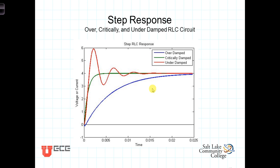The step response of a circuit refers to the way the circuit responds when a voltage or current power supply is instantaneously switched into the circuit. As we saw in the natural response, the circuit responds in different ways depending upon its dampening. For an overdamped circuit, the voltage goes from one voltage to another basically exponentially. In the underdamped case, there will be an oscillation. And then there's the critically damped case, somewhere between the two.